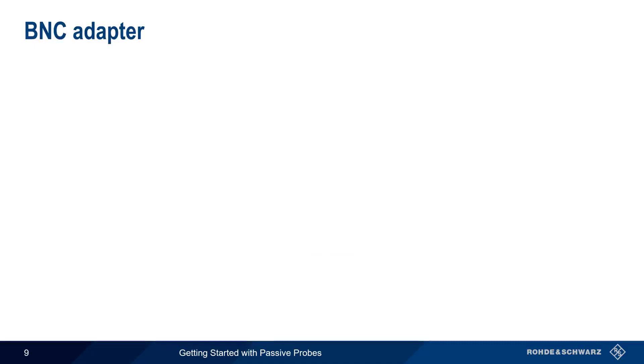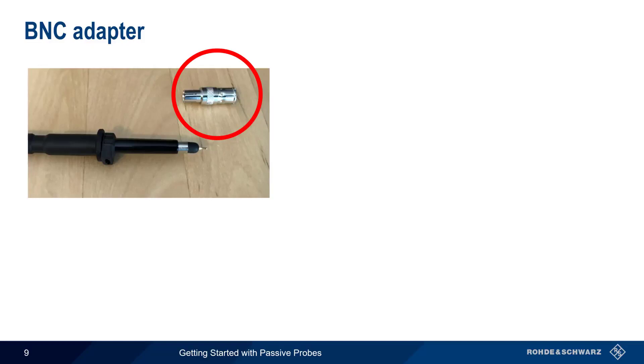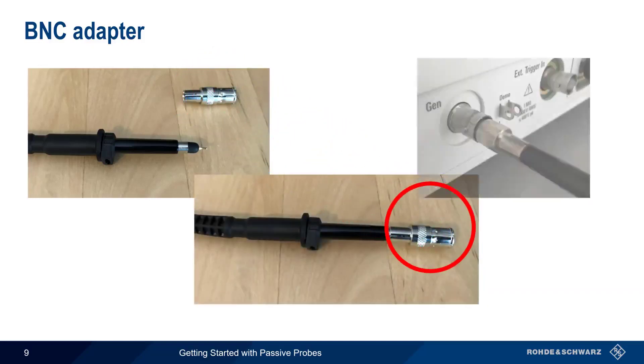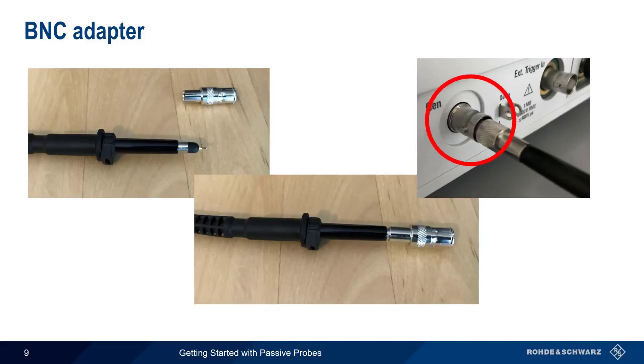In some cases, we want to connect our probe directly to a BNC connector, and this can be done using the BNC adapter. This adapter is slipped over the end of the probe tip, allowing the probe tip to be directly inserted into a BNC type connector.